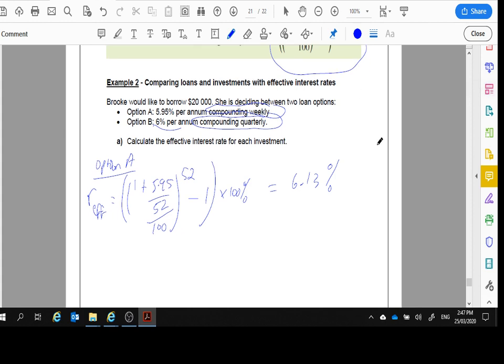Option B, the effective interest rate will equal - using the rule - 1 plus 6% divided by 4 (since it's compounding quarterly) divided by 100, all to the power of 4, minus 1, times 100%. The reason we're minusing 1 is because we're taking away that original 100%. When we work this out, we get 6.14%.